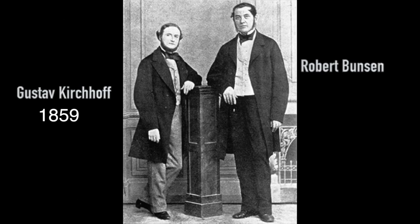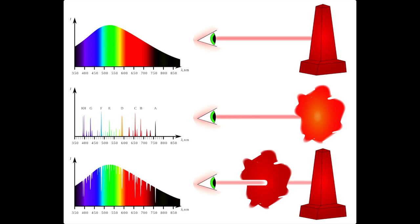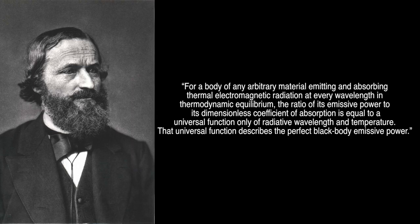In 1859, Gustav Kirchhoff and Robert Bunsen burned enough things to discover that those dark lines are absorption lines. By using this method and a new scope, they discovered sodium in the sun. Kirchhoff's Law of Thermal Radiation states: for a body of any arbitrary material emitting and absorbing thermal electromagnetic radiation at every wavelength in thermodynamic equilibrium, the ratio of its emissive power to its dimensionless coefficient of absorption is equal to a universal function only of radiative wavelength and temperature. That universal function describes the perfect black body emissive power.